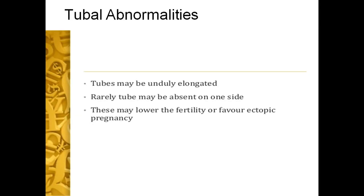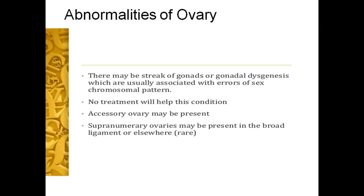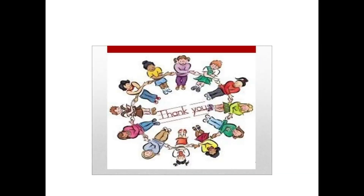Tubal abnormalities: tubes may be unduly elongated. Rarely, tubes may be absent on one side. This may lower fertility or favor ectopic pregnancy. Abnormalities of the ovary: there may be streak gonads or gonadal dysgenesis, which are usually associated with errors of sex-chromosomal pattern. No treatment will help this condition. An accessory ovary may be present. A supernumerary ovary may be present in the broad ligament or elsewhere. Thank you for listening.